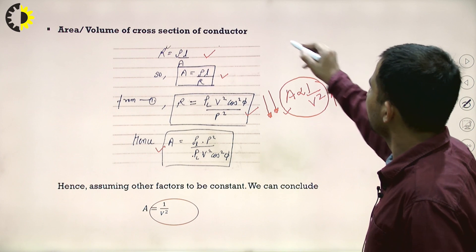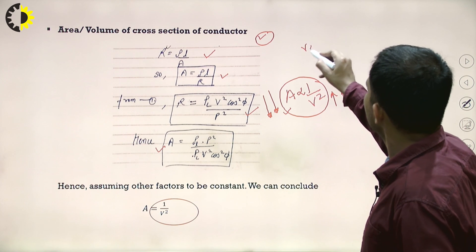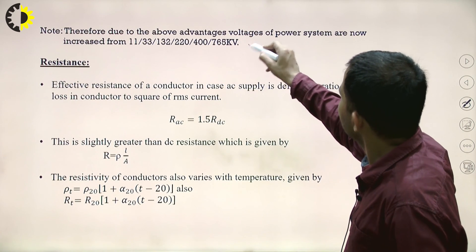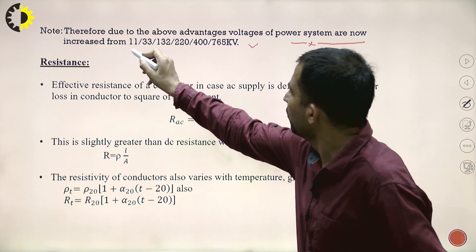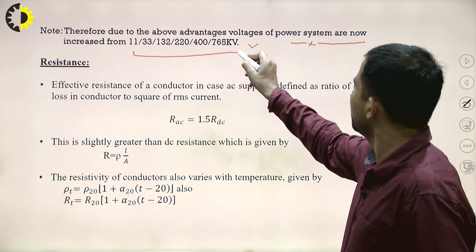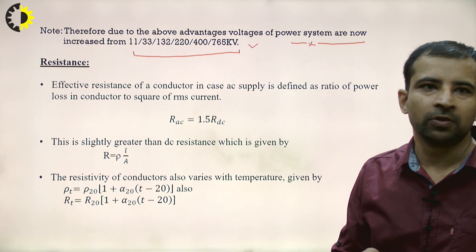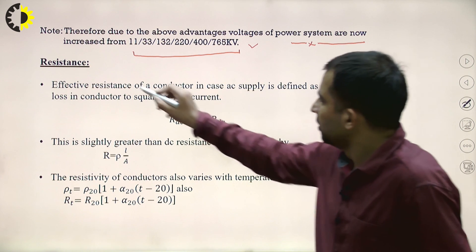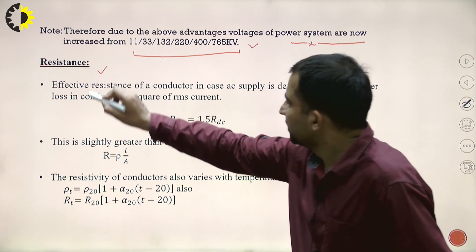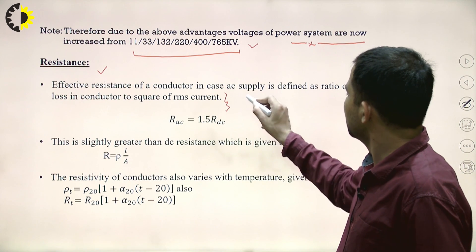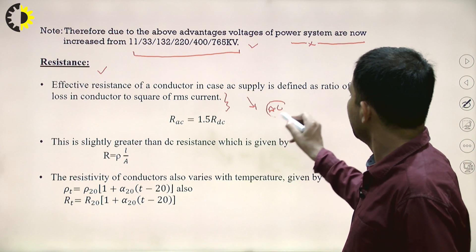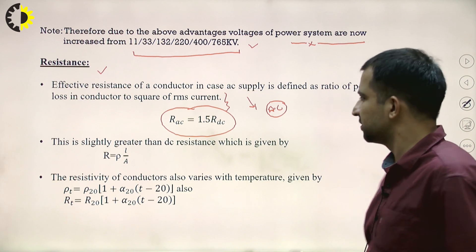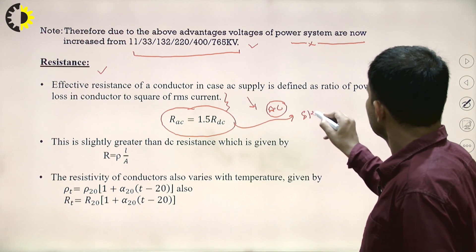Due to these three advantages — increased receiving-end power, reduced transmission losses, and smaller conductor cross-section — we increase transmission voltages from 11 kV, to 33, 132, 220, 400, and 765 kV. Another concept: RAC = 1.5 × RDC, meaning AC resistance is greater than DC resistance, and this is due to the skin effect.